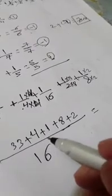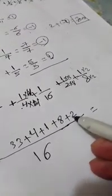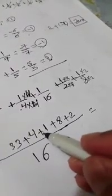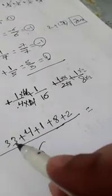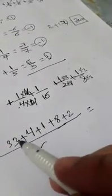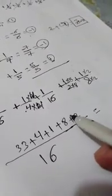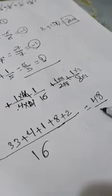The sum of 33 plus 4 plus 1 plus 8 plus 2: 2 plus 8 is 10, 1 plus 4 is 5, 33 plus 5 is 38, 38 plus 10 is 48. So 48/16.